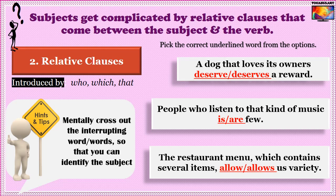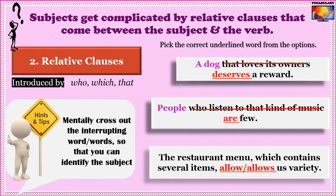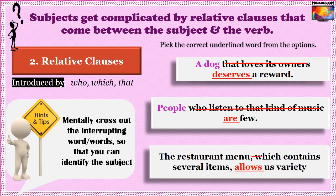Answers for the relative clause exercise: 'A dog that loves its owners deserves a reward' — remove the dependent clause and you get 'A dog deserves a reward.' Dog is singular, so 'deserves.' 'People who listen to that kind of music are few.' 'The restaurant menu, which contains several items, allows us variety' — since 'menu' is singular, 'allows' is correct.